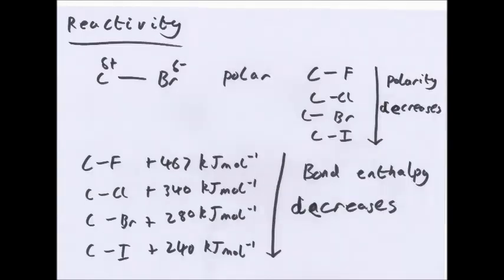Reactivity. Two things contribute to the reactivity of the halogenoalkanes: the polarity and the bond enthalpy. So the polarity is caused by halogen atoms being more electronegative than carbon atoms. So attracting electrons, they become slightly negative, slightly positive. Now, as you go down the group, the halogens become less electronegative, so polarity decreases.